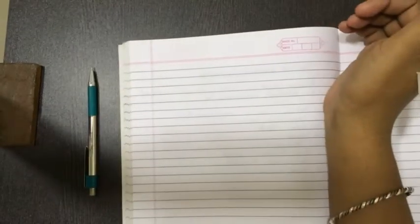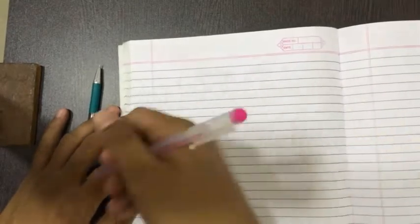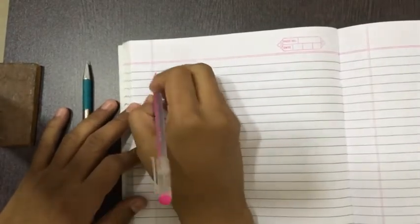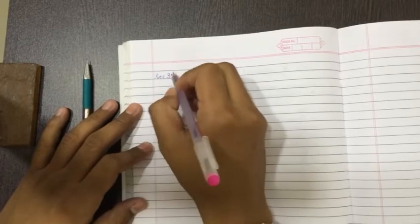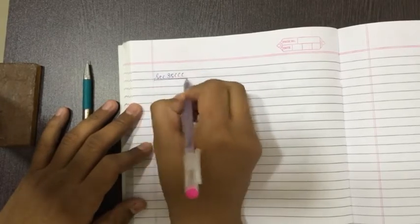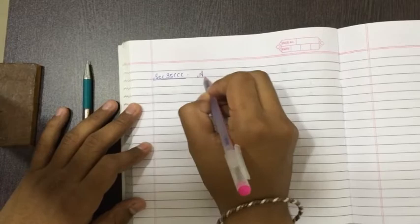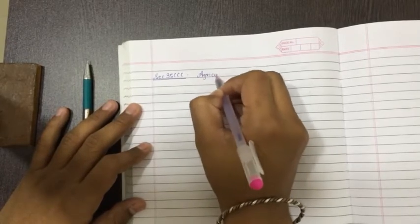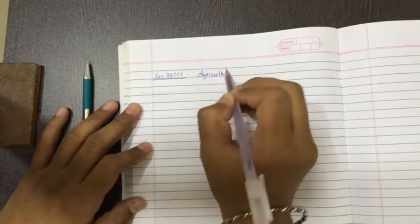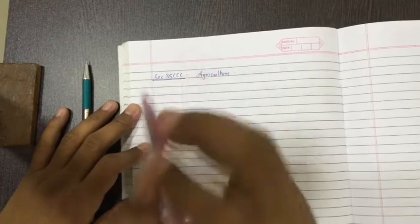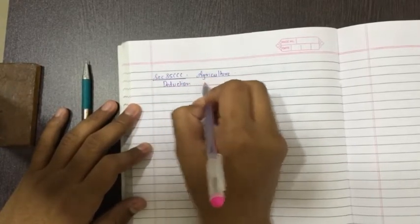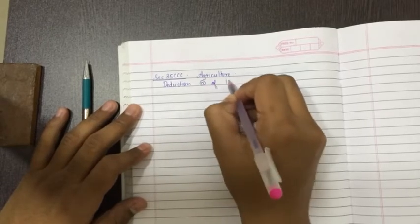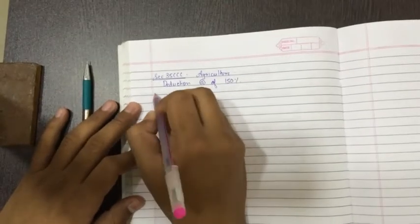Hello friends, now let's continue with our PGPP. The remaining sections which were left will be taught today. Let's start with Section 35CCC. This section is related to agriculture. First, let's see how much deduction will get. Deduction at the rate of 150 percent. For what purpose? Let's see the purpose.